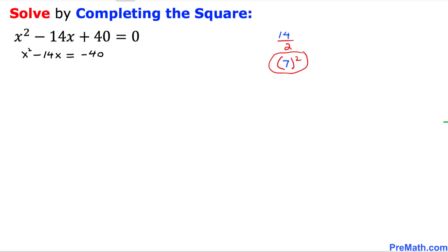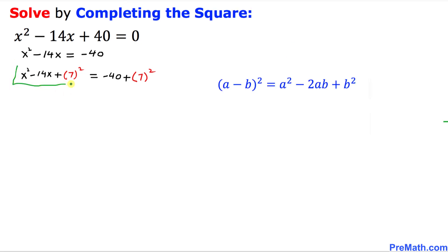So we have x squared minus 14x plus 7 squared equals negative 40 plus 7 squared. On the left hand side this represents a perfect square. Using the identity (a minus b)² = a² minus 2ab plus b², we can write the left side as (x minus 7)² equals negative 40 plus 49.